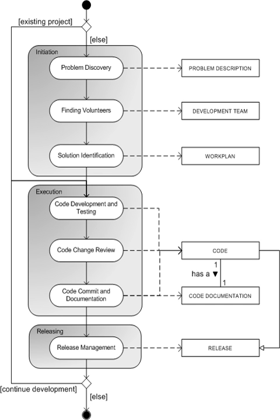Open-source software development is the process by which open-source software, or similar software whose source code is publicly available, is developed by an open-source software project. These are software products available with their source code under an open-source license to study, change, and improve their design.